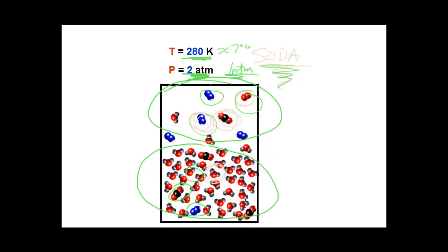And we can see that in the gas phase there are four different substances because there are four different types of particles: nitrogen, CO2, oxygen, and water.